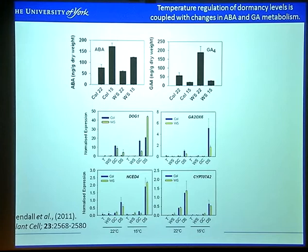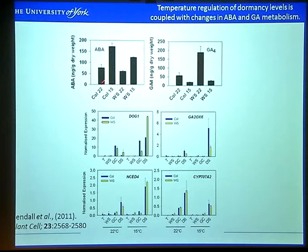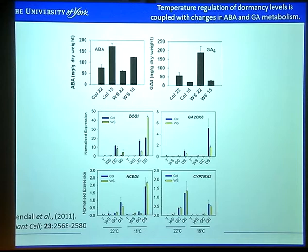ABA and GA are two important plant hormones involved in regulating dormancy, and it's the balance between these two hormones that's important. When you switch the maturation temperature from 22 to 15 degrees, you get an increase in ABA levels in both Columbia and WS. And for GA4, you get a decrease in levels. This goes along with the dormancy levels: low ABA and high GA in non-dormant seeds, and high ABA and low GA in dormant seeds, suggesting that GA and ABA levels are temperature-regulated in seeds.